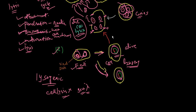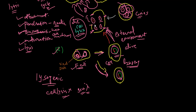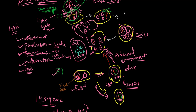On occasion, the bacteriophage DNA can break out of the prophage and initiate the lytic cycle, converting the lysogenic cycle into the lytic cycle. This conversion is triggered by external environmental factors. Once converted, cell lysis takes place and the lytic cycle proceeds.